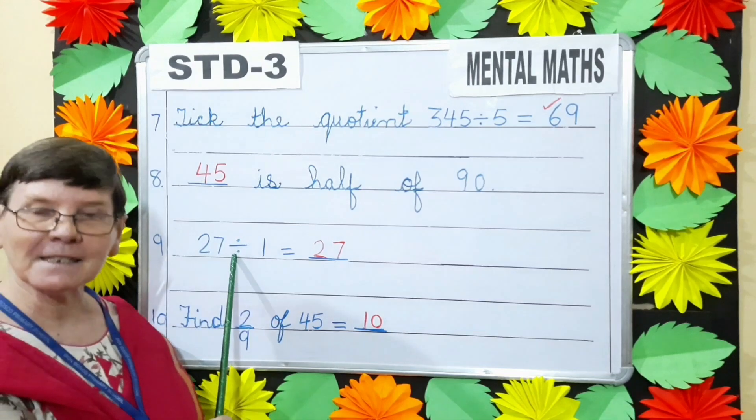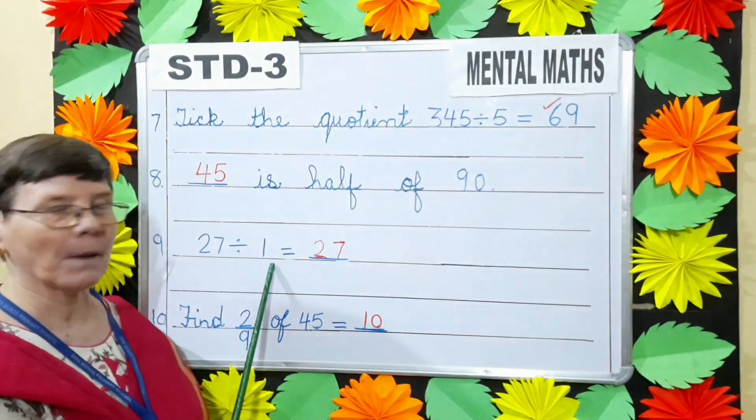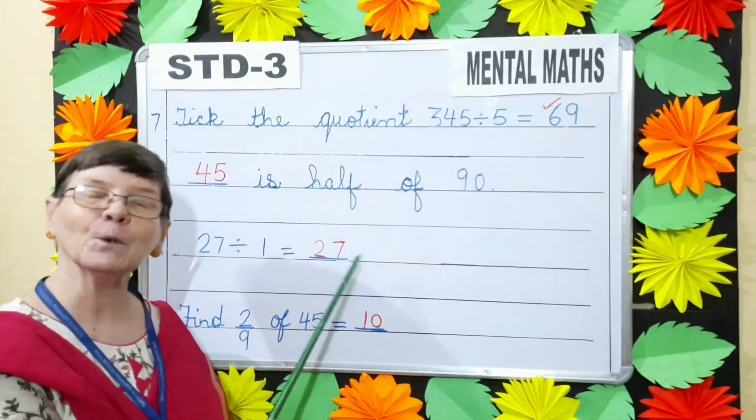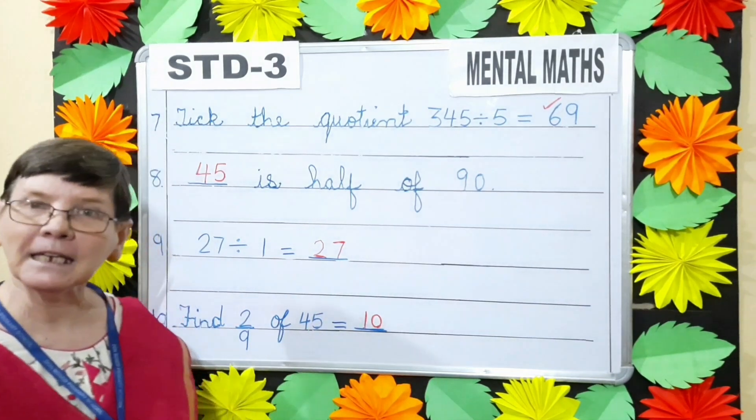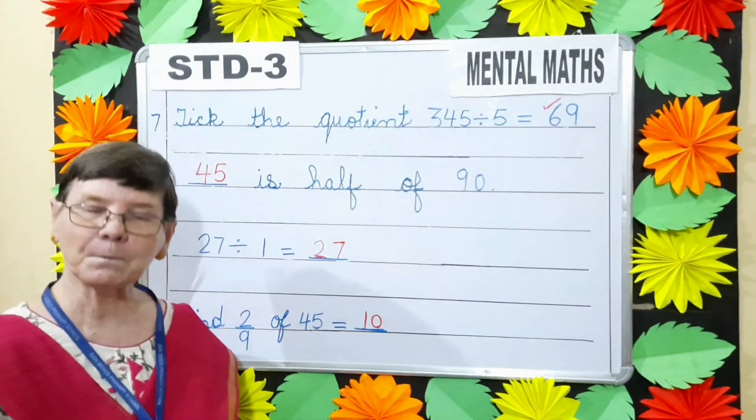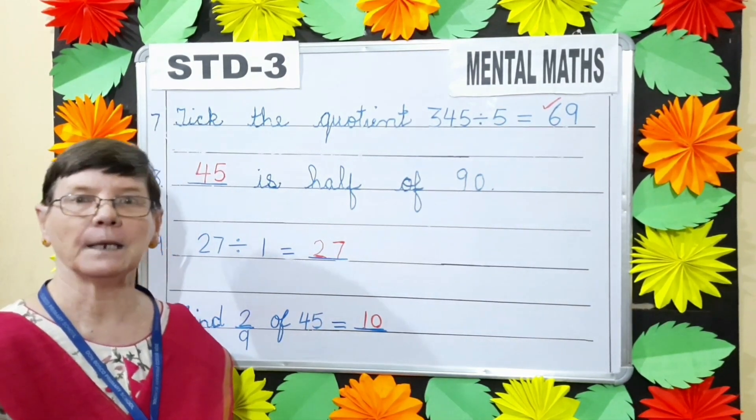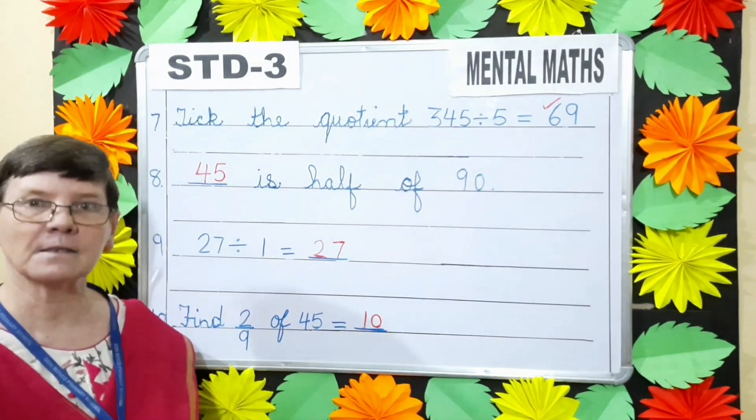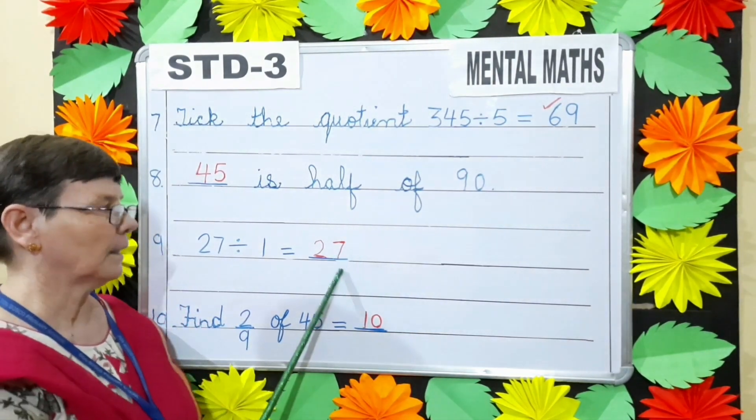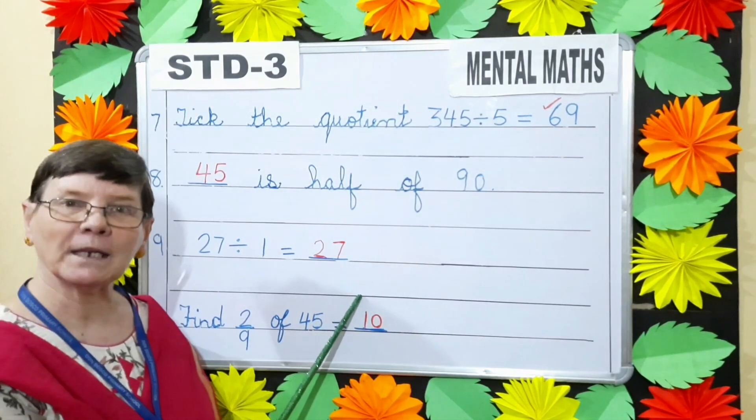Next, 27 divided by 1 is equals to dash. Any number divided by 1 will give the number itself as the answer. So here, the answer is 27.